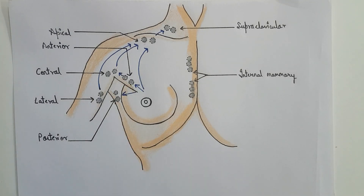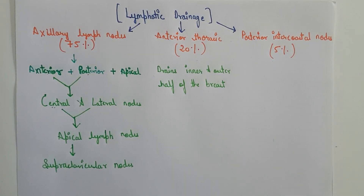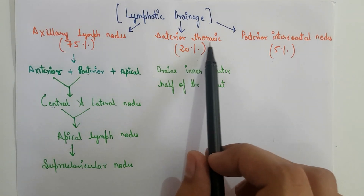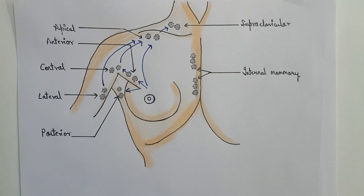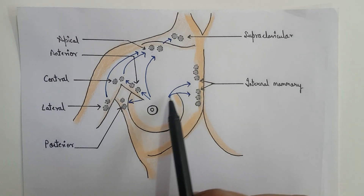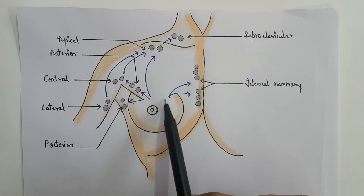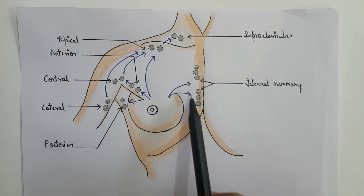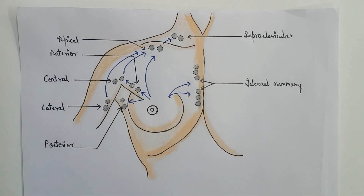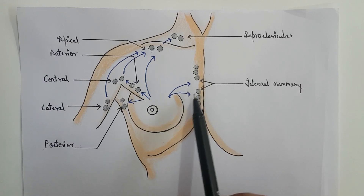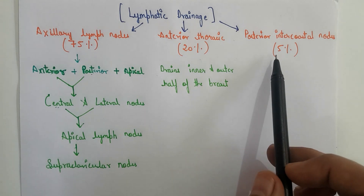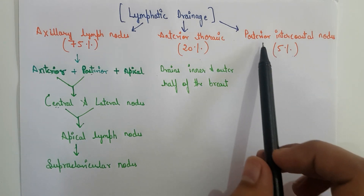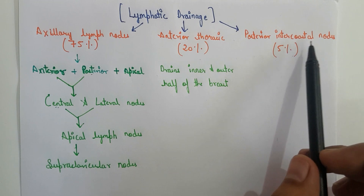This arrow represents the drainage system of the lymph from the breast that we have already discussed. The anterior thoracic or parasternal lymph nodes drain the inner and outer half of the breast. This arrow represents the direct drainage from the inner and outer half of the breast to the internal mammary or parasternal or anterior thoracic group of lymph nodes. Finally, 5% of the lymph of the breast drains into the posterior intercostal group of lymph nodes.